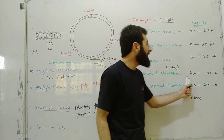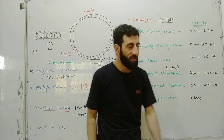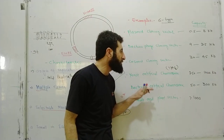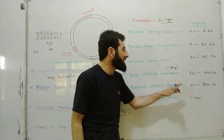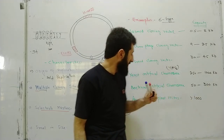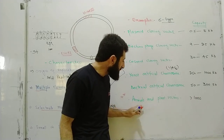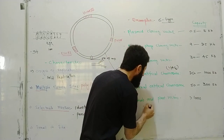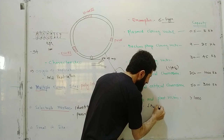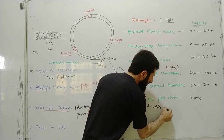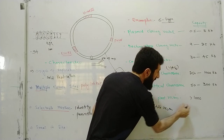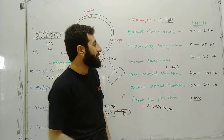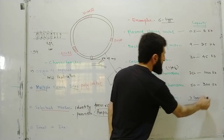Yeast Artificial Chromosomes (YAC) can carry 250 to 1000 kilobases. Bacterial Artificial Chromosomes (BAC) can carry 50 to 300 kilobases. Animal and plant vectors are also called shuttle vectors and can carry very large inserts.